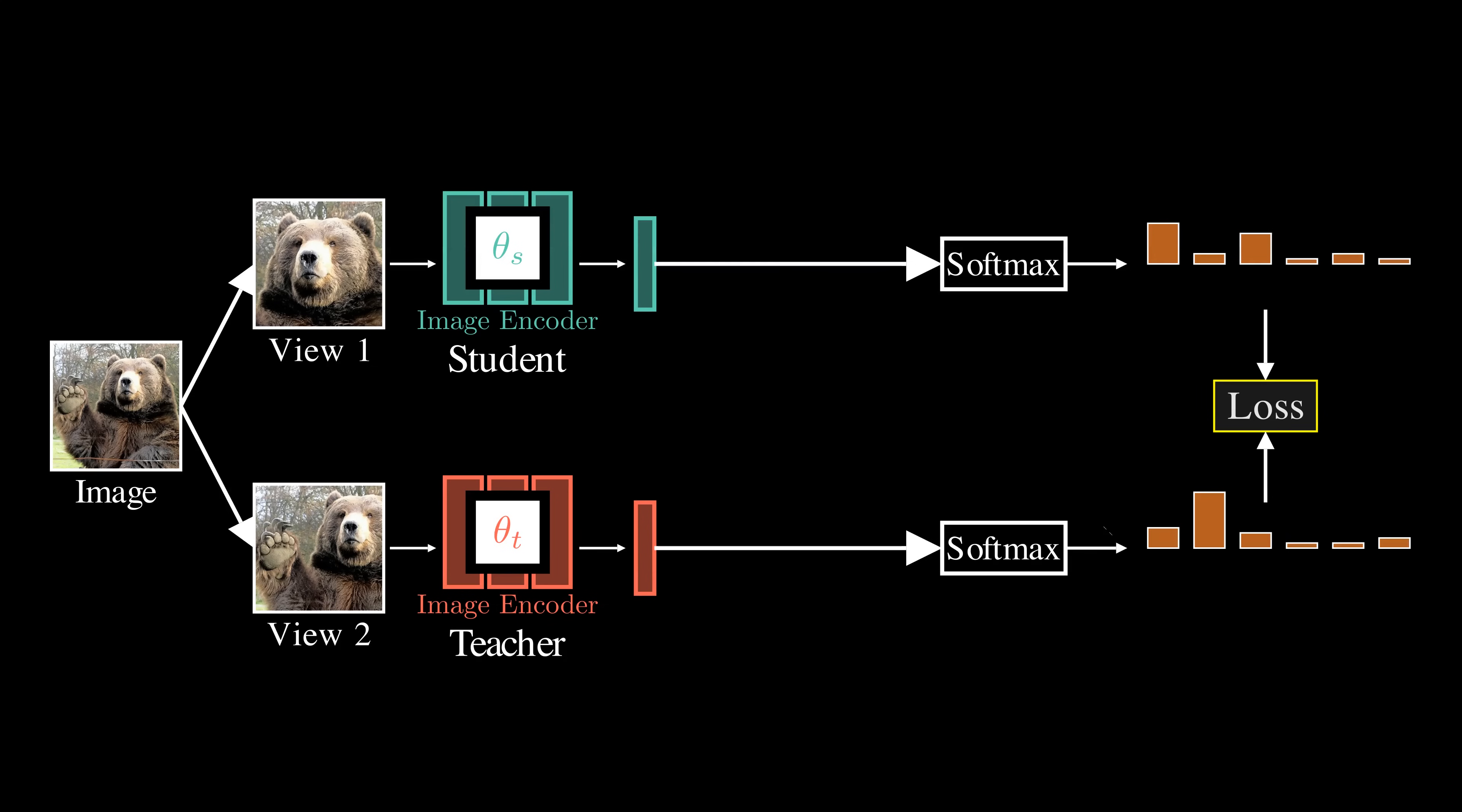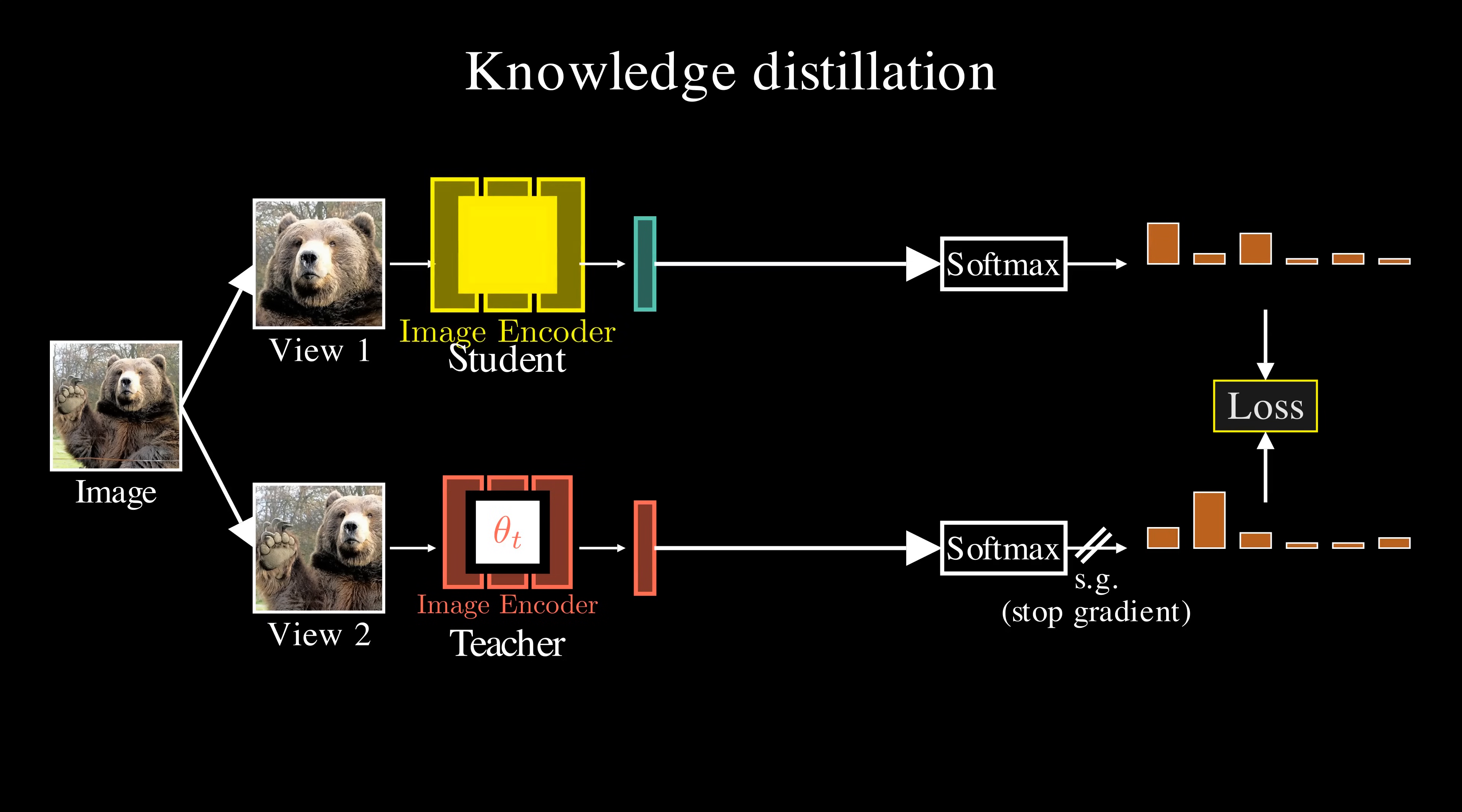A key detail is that we stop the gradient from flowing into the teacher network during training. In this setup, only the student network's parameters are updated to match the teacher's predictions, while teacher provides a stable target. This approach is known as knowledge distillation. Typically, we use it to distill knowledge from a powerful large teacher model to a smaller student model, making inference more efficient. In our case, both student and teacher models have the same architectures and model size.